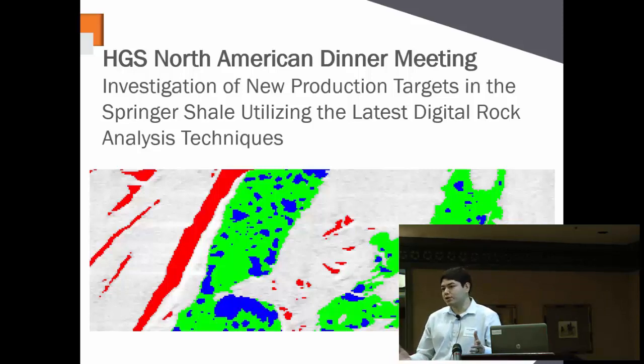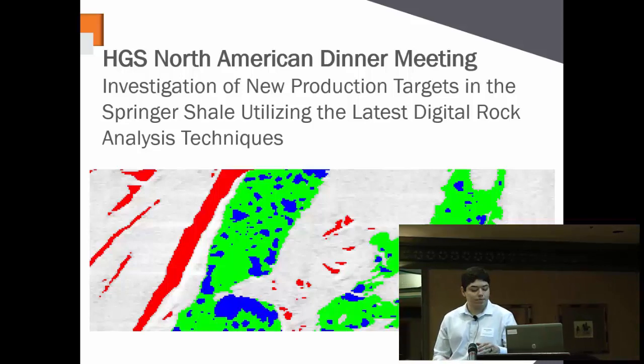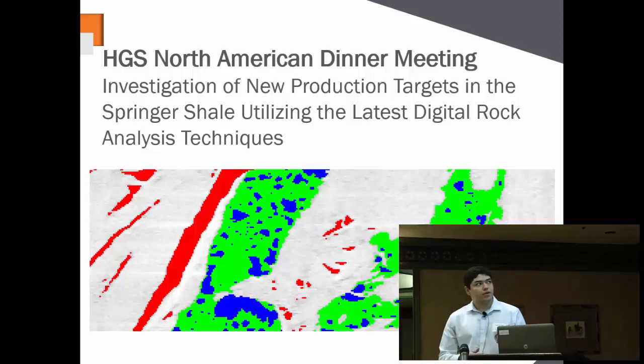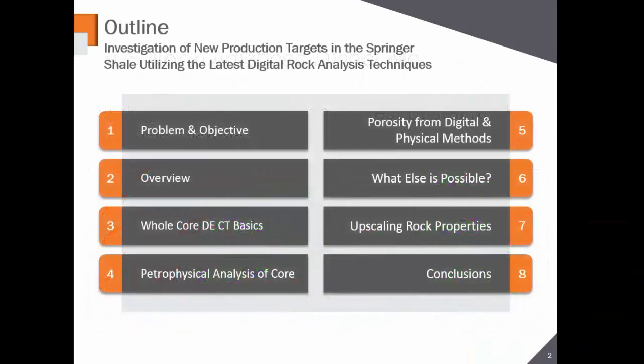We will be talking about the Springer Shale — really the Goddard Shale — Mississippian in age. We'll be covering the problem and objective, an overview, some basics on whole core CT analysis, petrophysical analysis on the derived data, and a comparison — an integration of both digital and physical lab measurements with regards to porosity. And then there's a fun section on what else is possible: so much more we can do in imaging analysis on rocks that can be automated and digitized. This is a teaser on what that might look like.